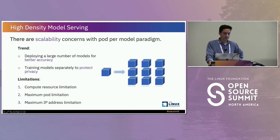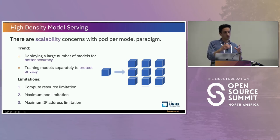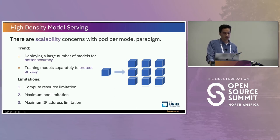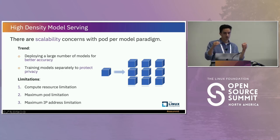One thing about how KServe is built is on this paradigm known as the pod-per-model paradigm. If I want to deploy a model, KServe is deploying a pod, and inside that pod is the runtime as well. Maybe there are other pods associated with this one model too. You can start to imagine that if I want to deploy multiple models, that means more resources and more pods being deployed. There's a trend in the field to deploy larger numbers of models for ideas like better accuracy — for example, a model per news topic to narrow the scope — as opposed to making one big model that does it all.